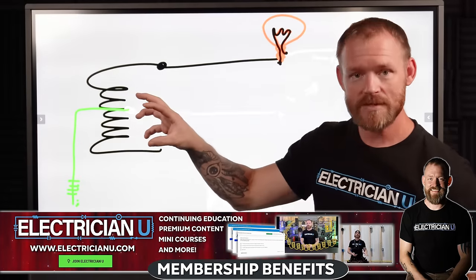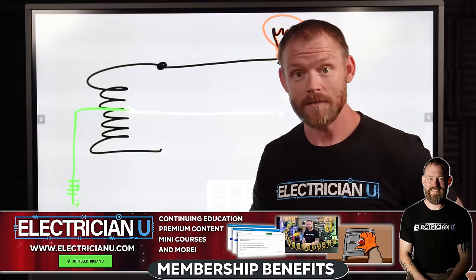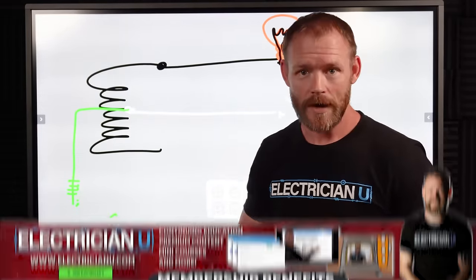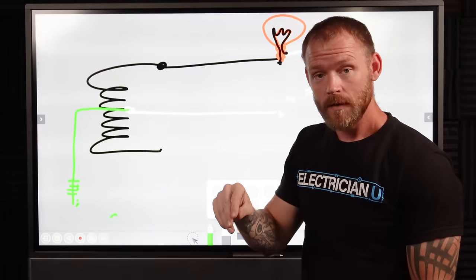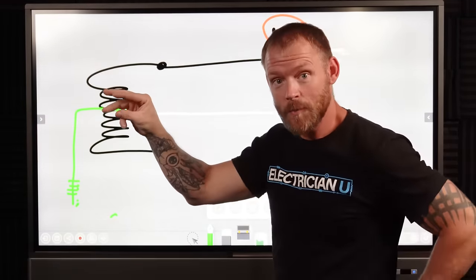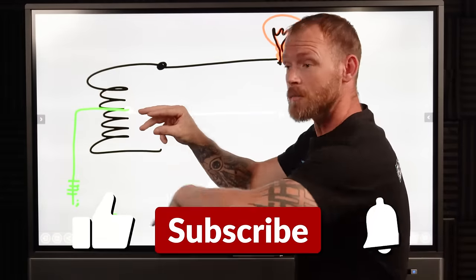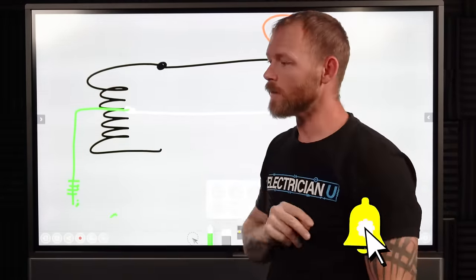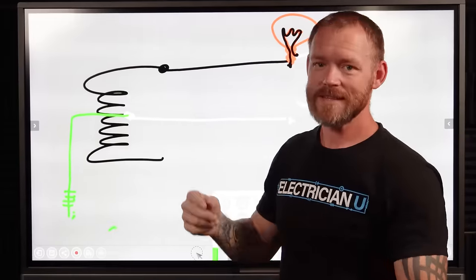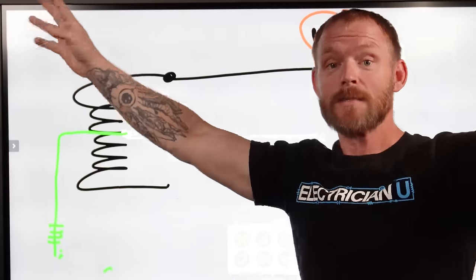So just understand when you're messing with something, what else are you touching? A lot of older guys will teach, put one hand in your pocket. If you're messing with something, keep one hand in your pocket. And that way your other hand is not giving you a second point to complete a circuit with. Obviously that's not practical all the time, but it's between two things.